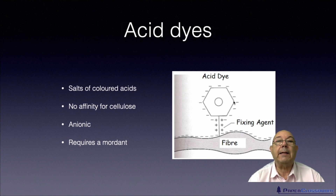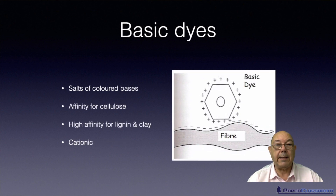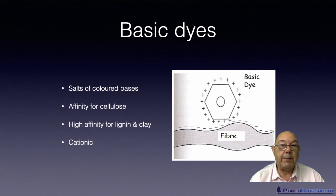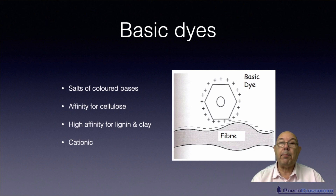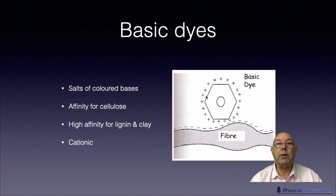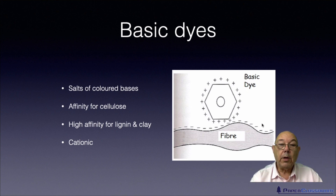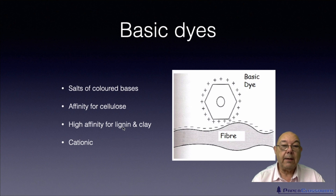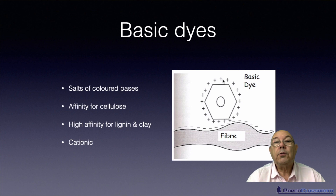So that takes care of acid dyes. You'll see a similar thinking for basic dyes. Basic dyes are salts of coloured bases. They do have an affinity for cellulose. Going back to our chemistry, a base is a proton acceptor. So here's our base molecule — it's accepted some protons, therefore it has a positive charge. Fibres have a negative charge. Positive and negative attraction — this is why it will have an affinity for our cellulose. It also has a high affinity for lignin and for clay, and of course it's cationic in charge.